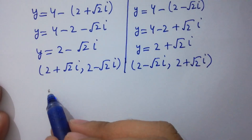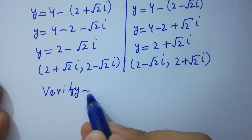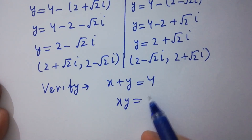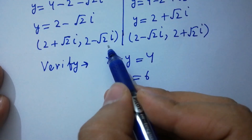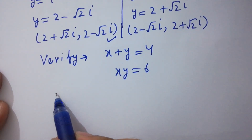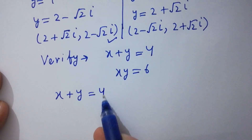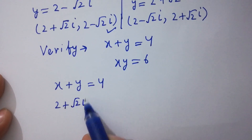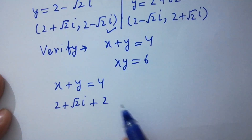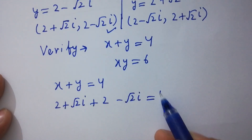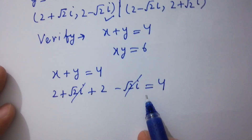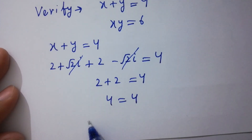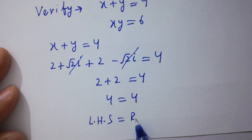In the last step, let's verify. For x plus y equals 4: substituting x equals 2 plus square root of 2i and y equals 2 minus square root of 2i, we get (2 plus square root of 2i) plus (2 minus square root of 2i). The imaginary parts cancel, giving 2 plus 2 equals 4. Left hand side equals right hand side.